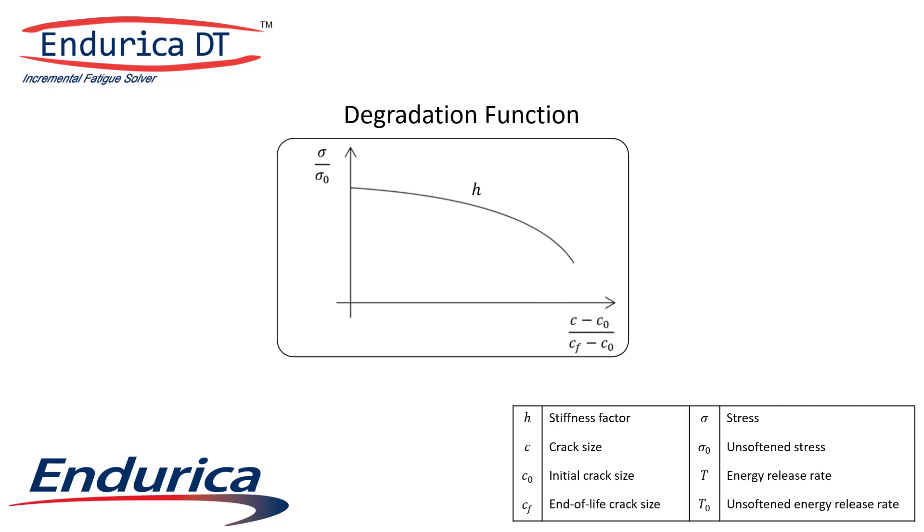You define the stiffness loss behavior using the degradation function. This defines how fast stiffness drops as cracks grow. Both axes are defined as ratios bounded by 0 and 1.